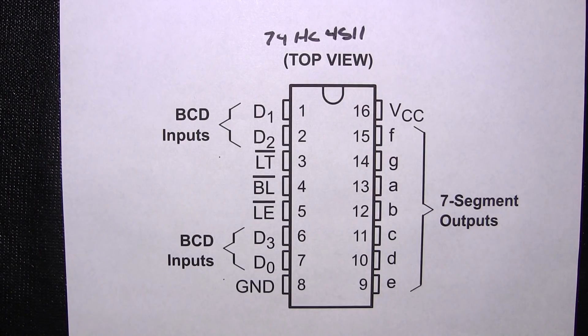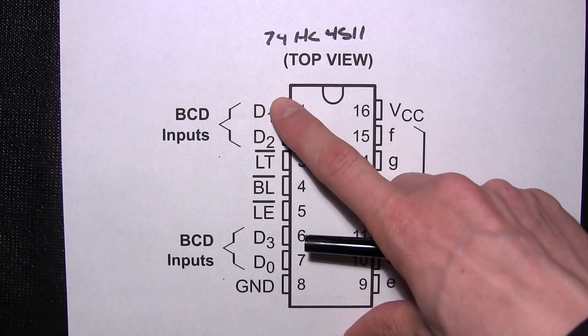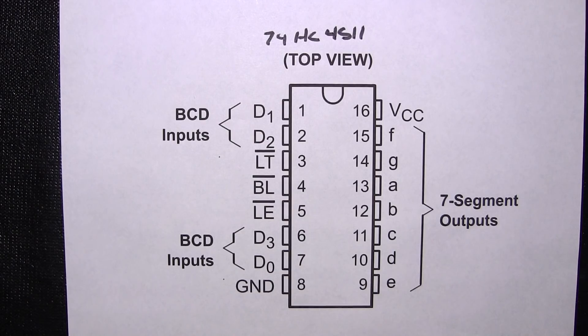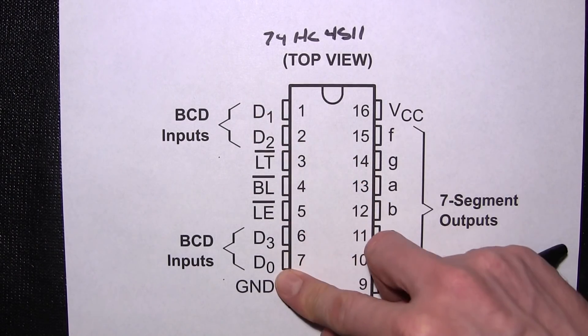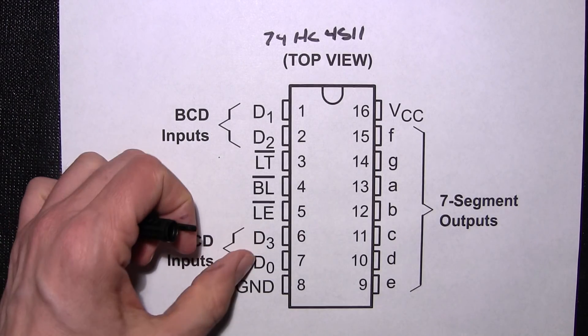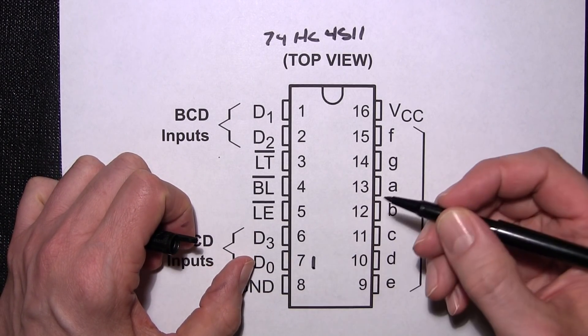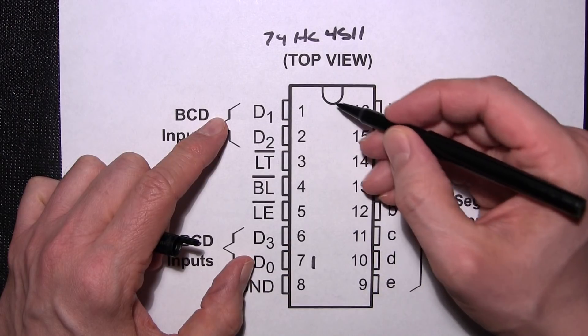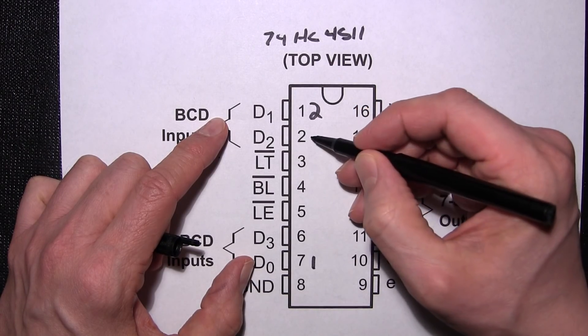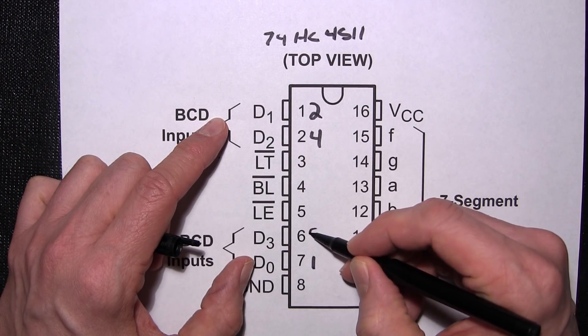So in order to make things even more confusing, of course we have this silliness going on here again. These are the BCD inputs, but they've got D0, D1, D2, and D3. Well, they have numbers here, why not just put the correct corresponding numbers? So D0 would be 1, D1 would be 2, D2 would be 4, and D3 would be 8.